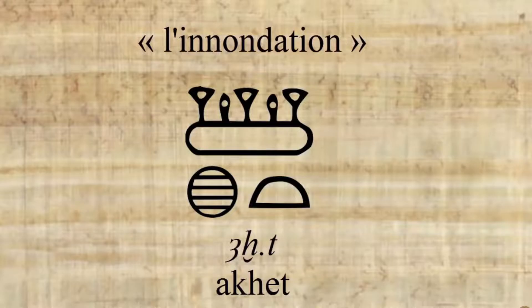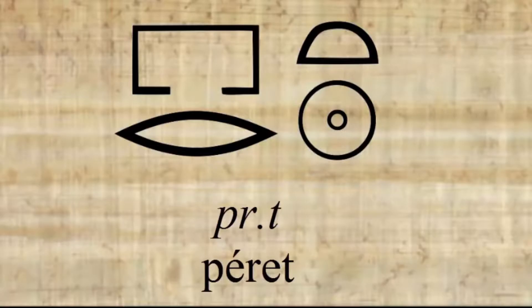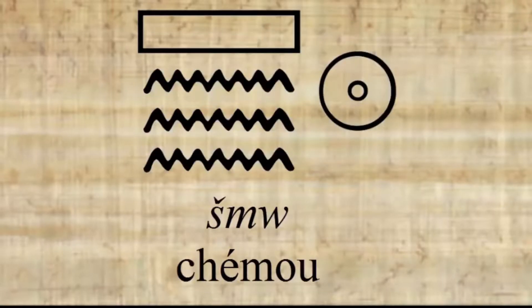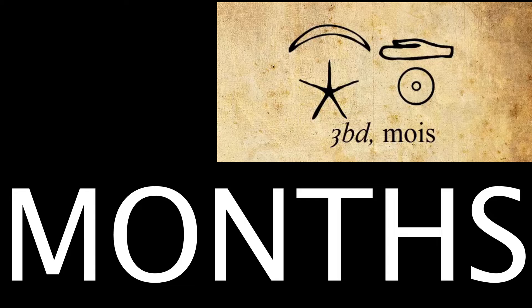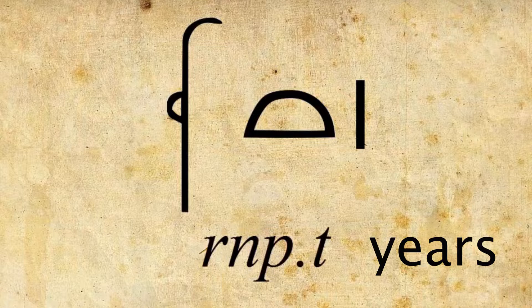Egyptians adopted a solar calendar by adding five days at the end of each year. The year is divided into three seasons: the season of inundation called Ahet, the season of growth called Peret, and the season of harvest called Shemu. Each season has four months, numbered from one to four. Years are designated in relationship with the ascension of the reigning king.